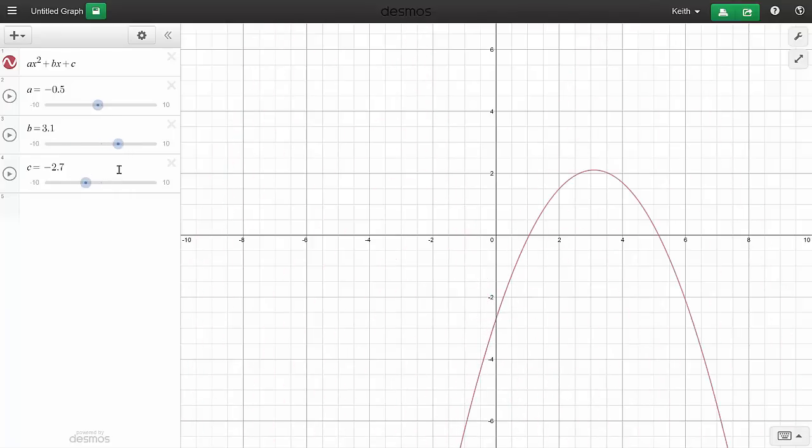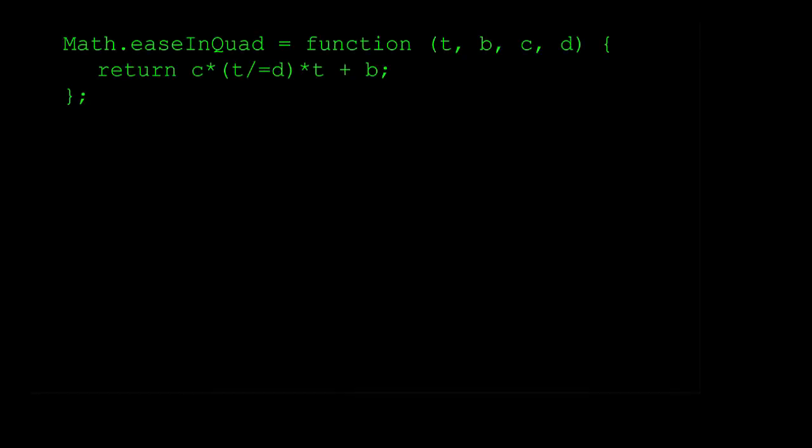Now let's look at the simplest quad easing formula, ease in quad, as Mr. Penner originally wrote it for ActionScript. Now at first glance, this doesn't seem like a quadratic function. That's because he's optimized the code quite a bit to hopefully make it run as fast as possible. Quite often, optimization and readability turn out to be the inverse of each other. But let's see if we can unravel the code and reverse engineer it back to its original quadratic form.